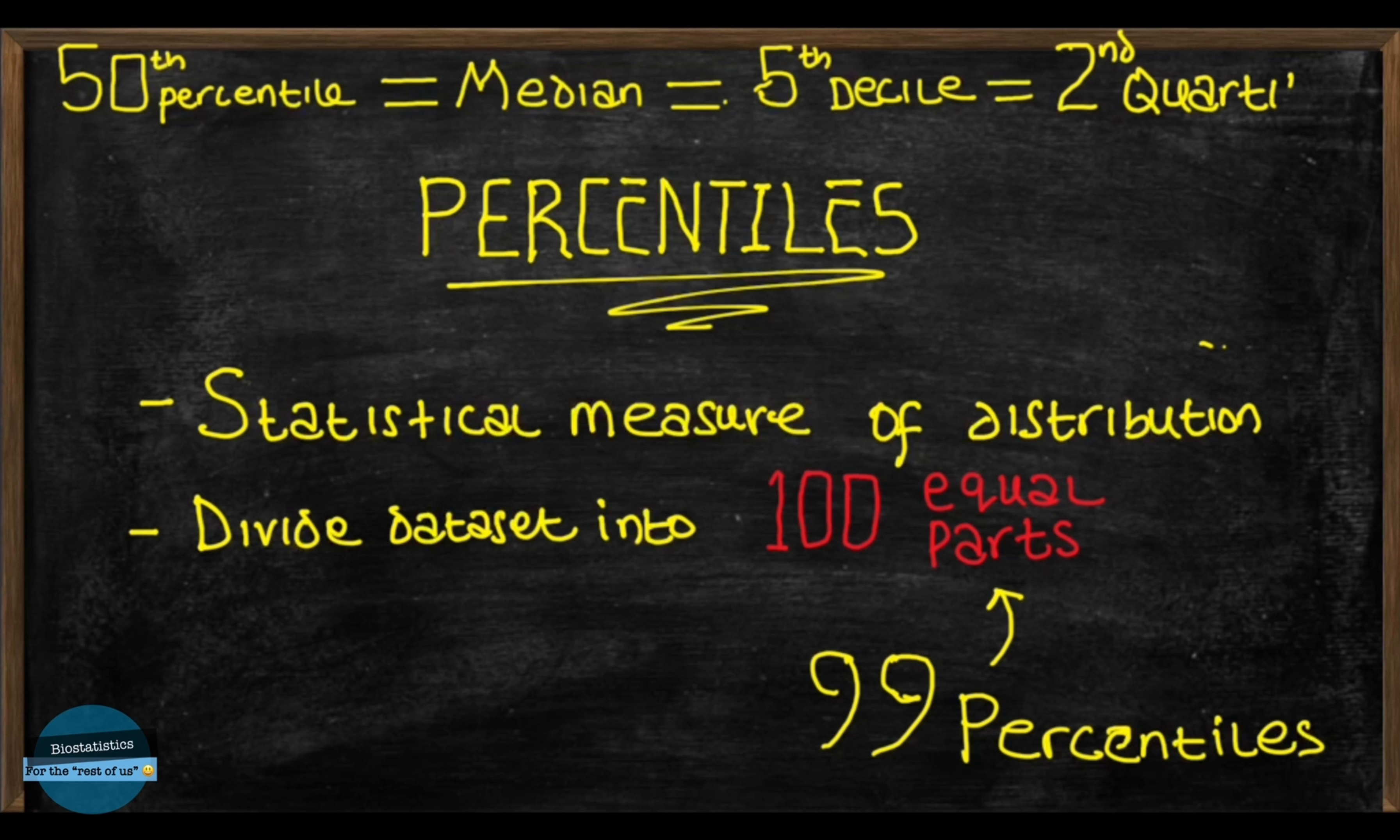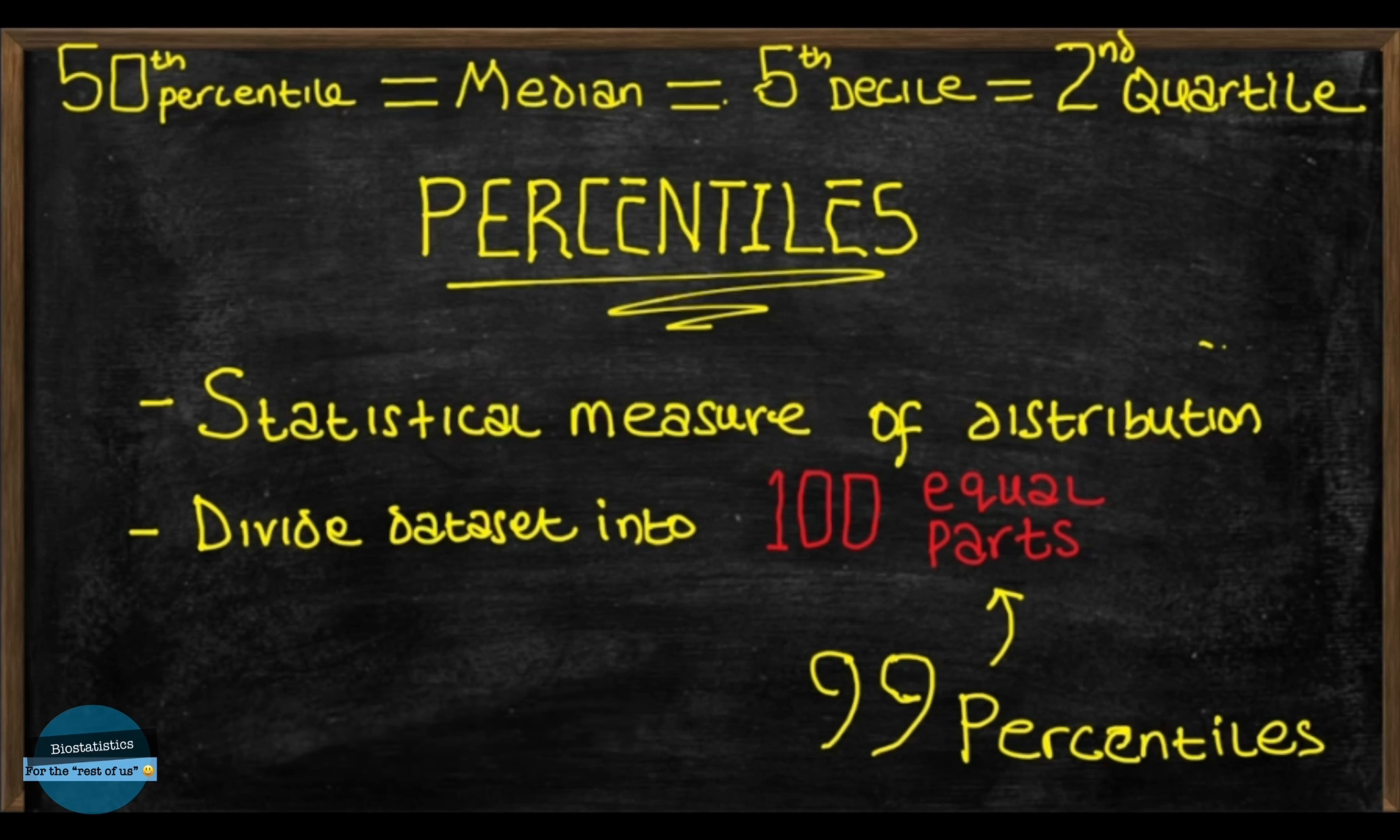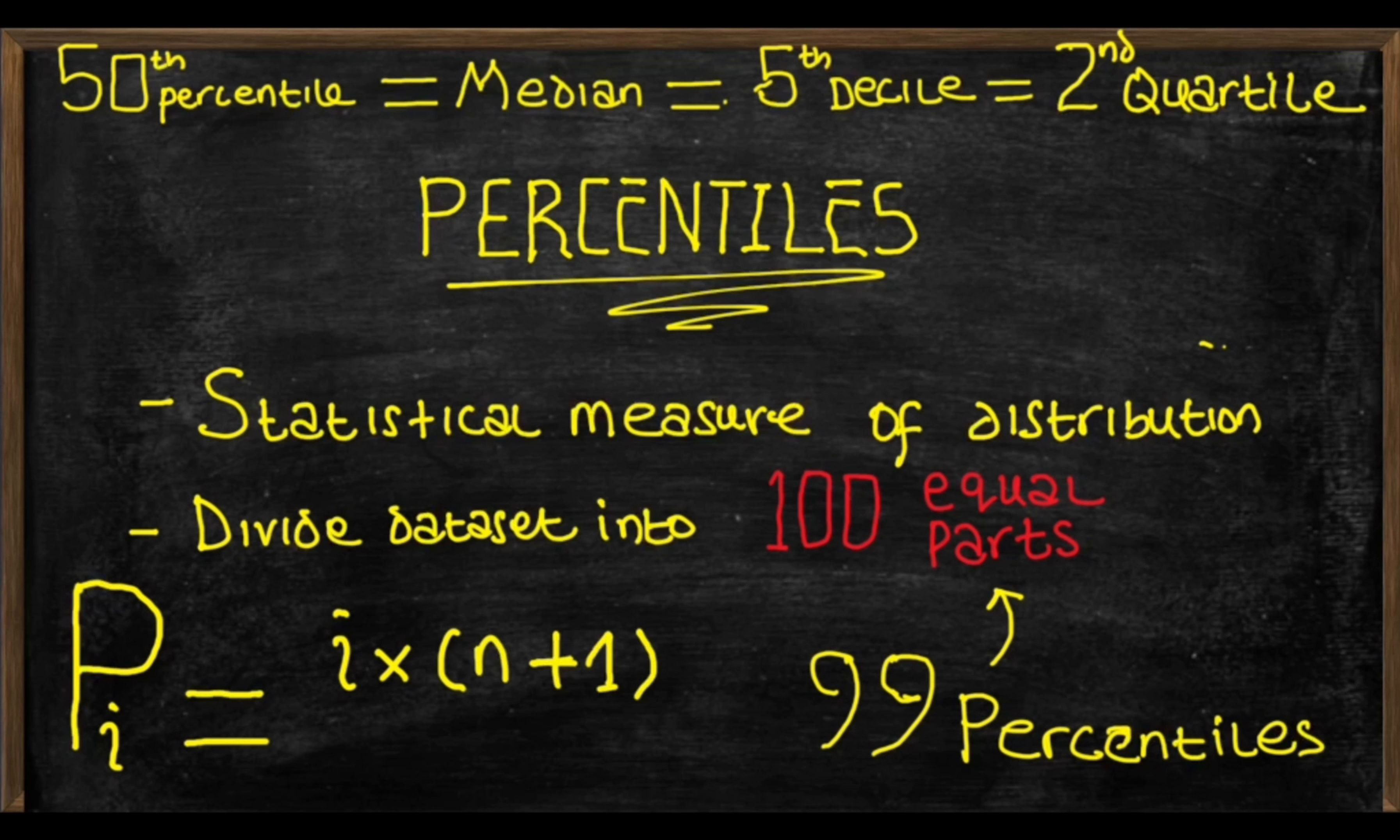Now, if you want to learn more about quartiles or deciles, check out the card above or the links in the description of this video. When you have ungrouped data, you can find the percentile using this simple formula. Pi is equal to i multiplied by n plus 1 in bracket all divided by 100.